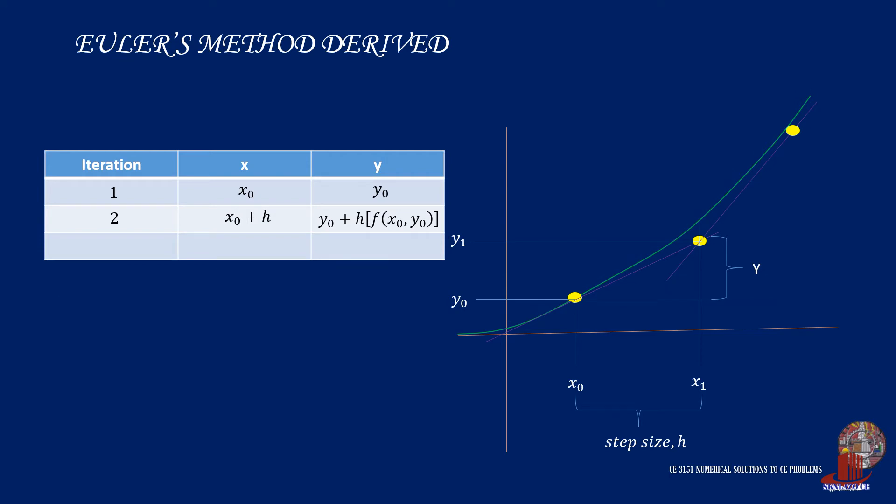The succeeding points follow the same procedure, so we can deduce that x2 will be computed as x1 plus the step size h. y2, on the other hand, will be determined from y1 plus h times the preceding function from point x1 and y1.